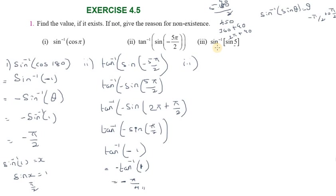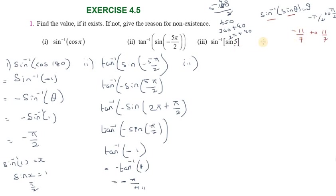Now sine inverse of sin 5. Using the property: sine inverse of sin theta equals theta. But 5 is approximately 22/7 (π), so we need to check the range. We compute 5 minus π: using π as 22/7, that gives 5 minus 22/7.